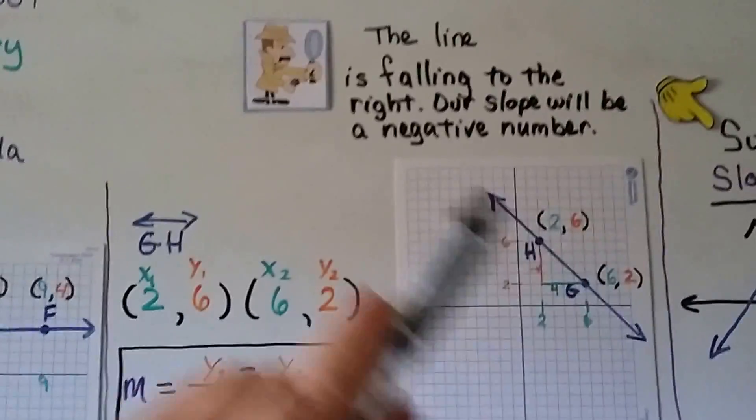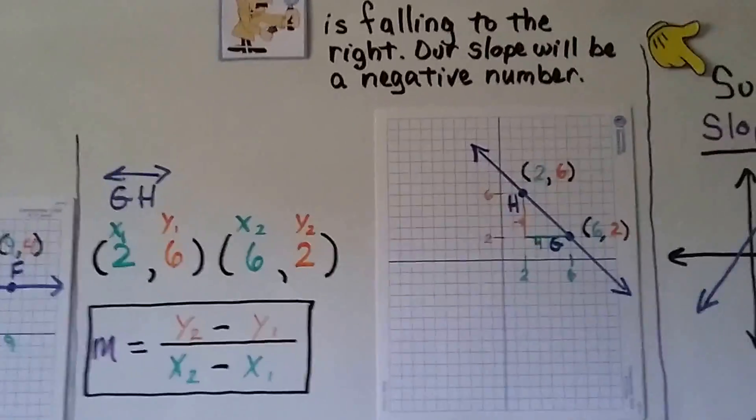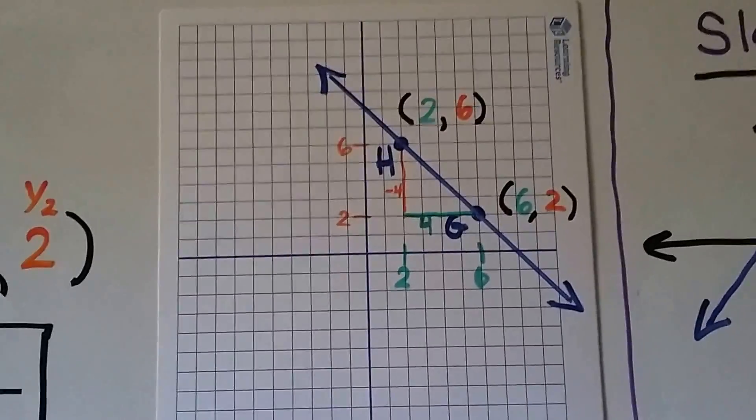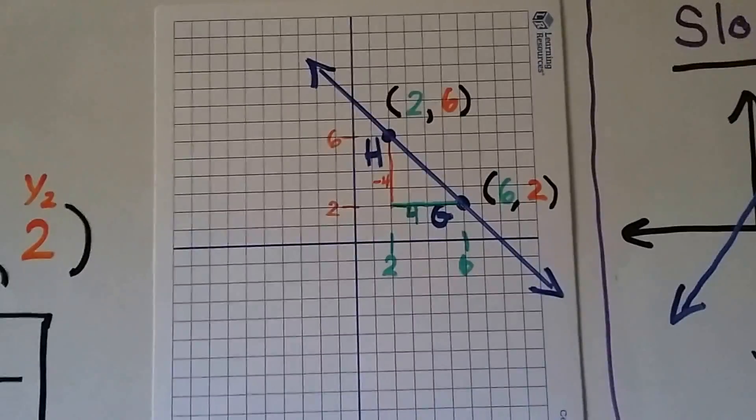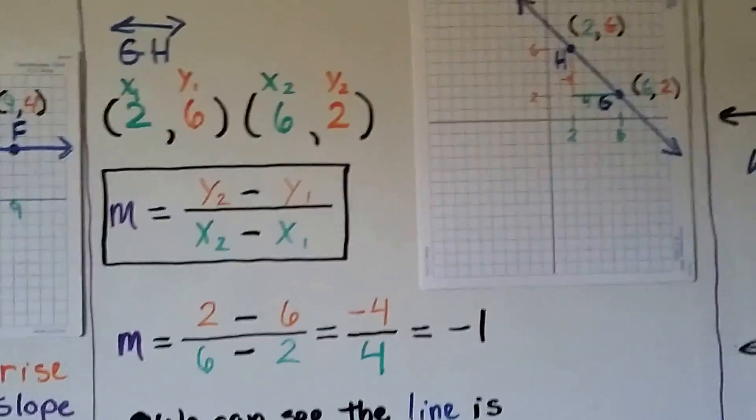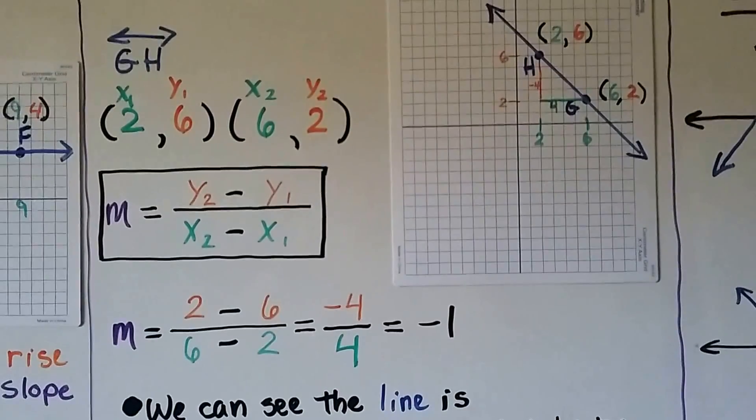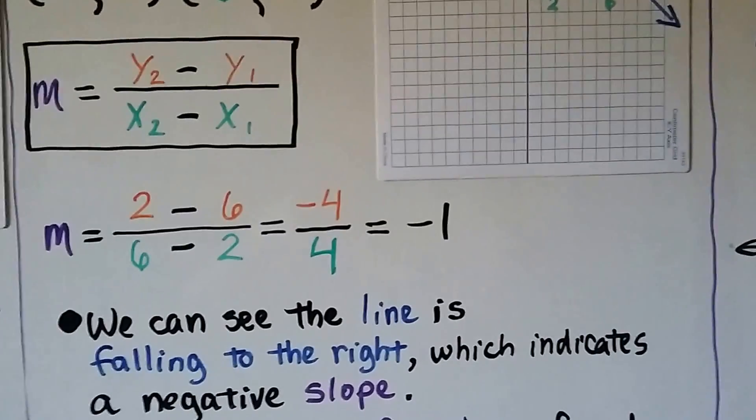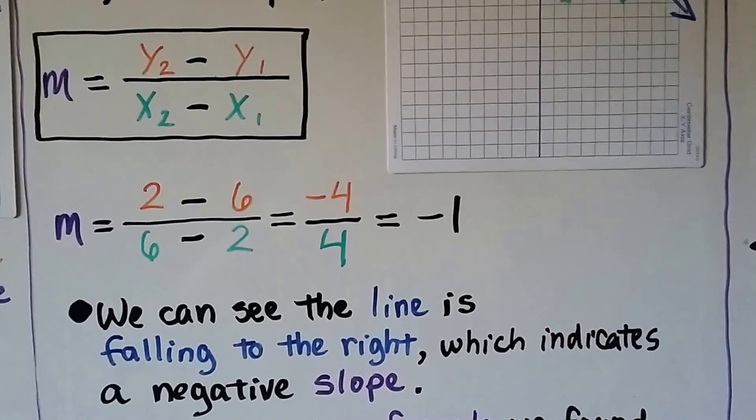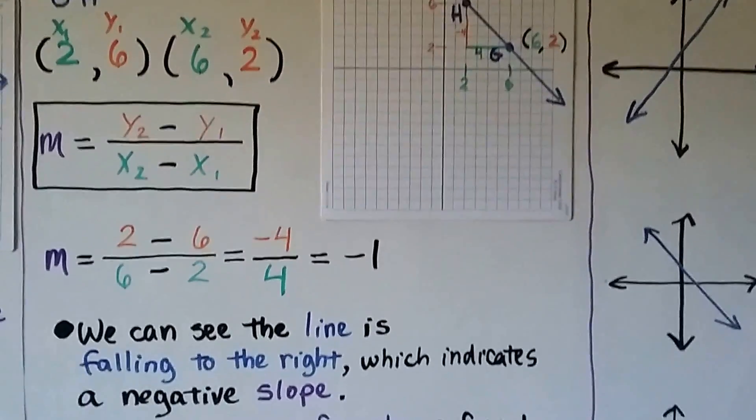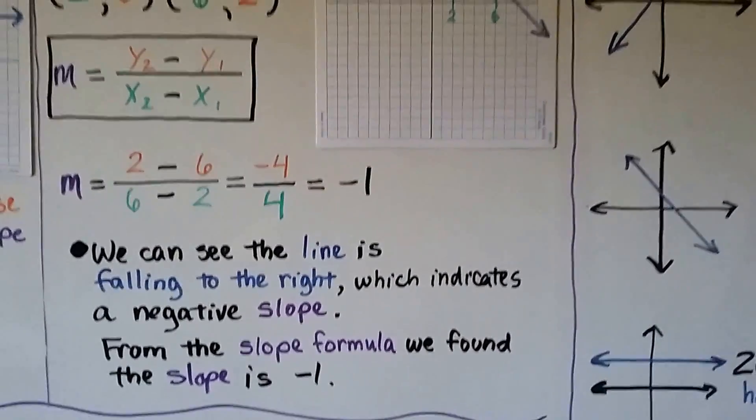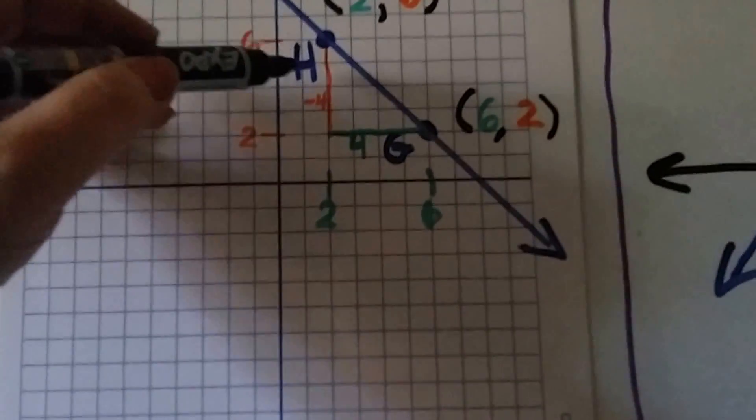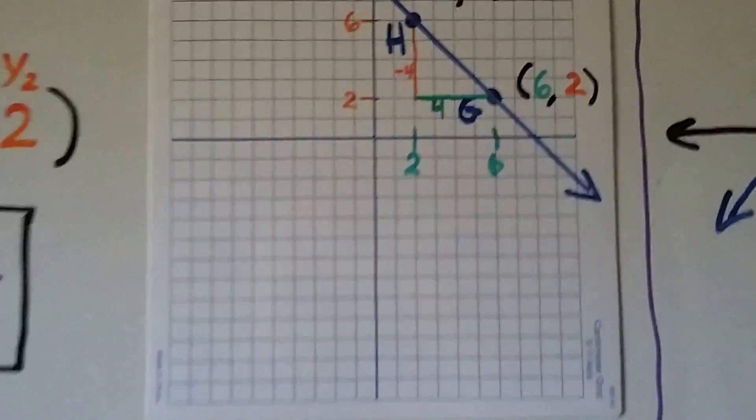For this one, the line is falling to the right. So we know our slope will be a negative number, whatever it is. We look at the graph and we look at our values. For the first point on the left, we've got a 2 for x and a 6 for y. And for our second point, we have a 6 for x and a 2 for y. They kind of swapped places. We have a 2, 6, 6, 2. So we put that into our formula. For y sub 2, y sub 1, we've got 2 minus 6. And for x sub 2, x sub 1, we've got 6 minus 2. So we end up with a negative 4 over 4. We simplify that same numerator and denominator, except it's got a negative sign. It's a negative 1. So we did get a negative slope out of that. And we can see the line is falling to the right, which indicates a negative slope. From the slope formula, we found the slope is negative 1. And we can look at the rise and the run on here. It's coming down 4 and it's going over 4. So we have a negative 4 over a 4.